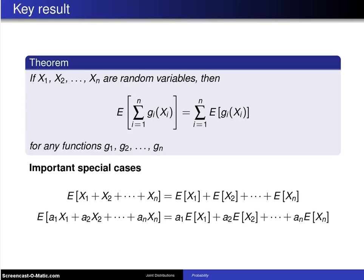Here's a key result concerning multivariate expected values. If x1 up to xn are random variables, and notice here it doesn't say if they're discrete or if they're continuous, they could be either, and furthermore it doesn't say if those random variables are independent or if they're dependent, that doesn't matter either, so this is a very general result.